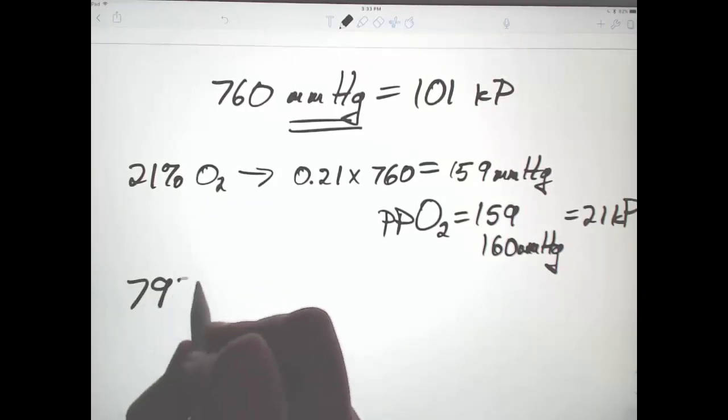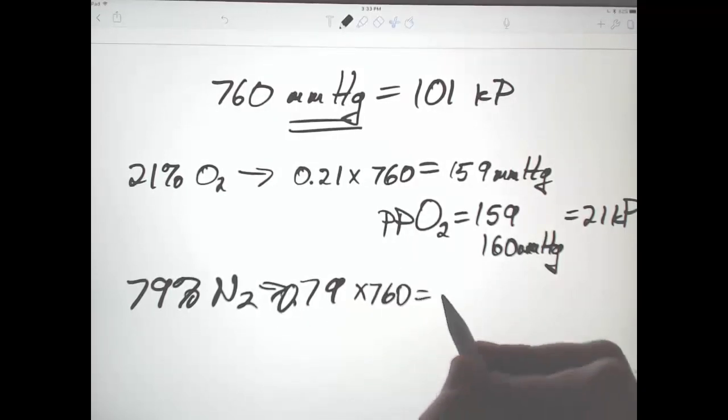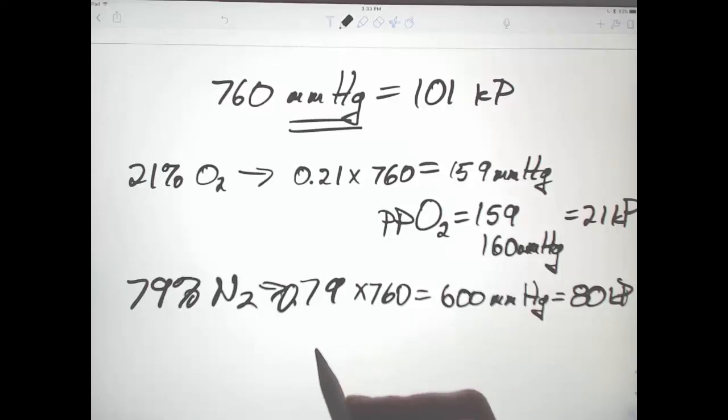Nitrogen, which we won't pay much attention to, is about 79%, so 0.79 times 760 equals about 600 mmHg, or about 80 kPa. And carbon dioxide, 0.03% of the atmosphere, less than 1 mmHg partial pressure.